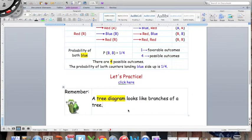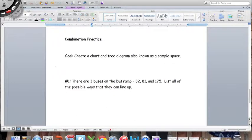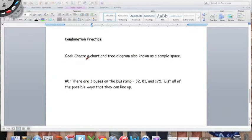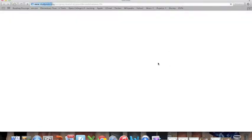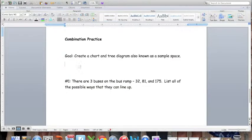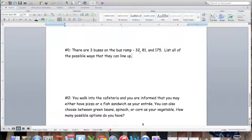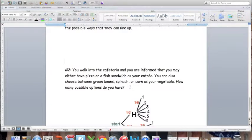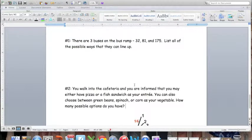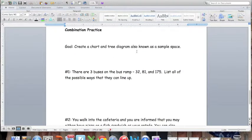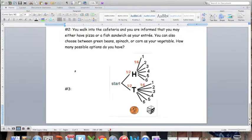Finally I gave you guys a bunch of different practice and this is where you can get your house points this week. Your goal is to create a chart and a tree diagram, also known as a sample space, for each of these. Number one: there are three buses on the bus ramp, number 32, 81, and 175. List all the possible ways that they can line up. This was actually one of those Math for the Staff problems. Here's another one: you walk into the cafeteria and you are informed that you may either have pizza or a fish sandwich as your entree. You can also choose between green beans, spinach, or corn as your vegetable. How many possible options do you have? For each of these I'll give you five house points each if you show me both a chart with the possible options and also a tree diagram.